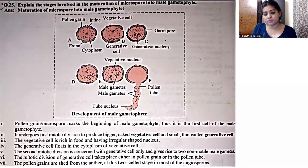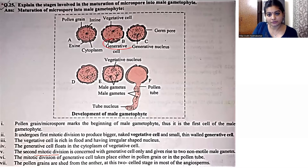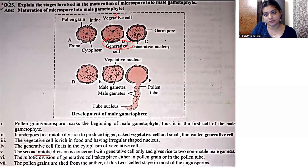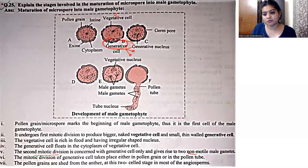अब बात होगी second mitotic division की — यह कहाँ होता है? The second mitotic division is only concerned with the generative cell. याद रखना कि second mitotic division में vegetative cell participate नहीं करता — सिर्फ generative cell ही वो perform करता है. यह आगे जाके दो non-motile male gametes में divide होगा. Non-motility means यहाँ पे यह move नहीं करेगा.